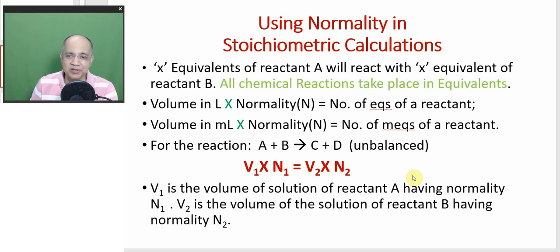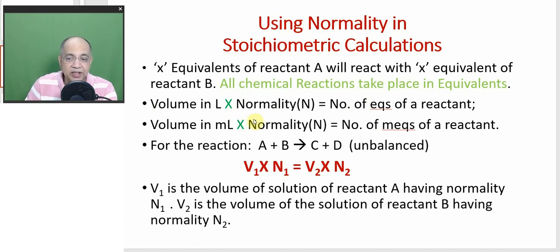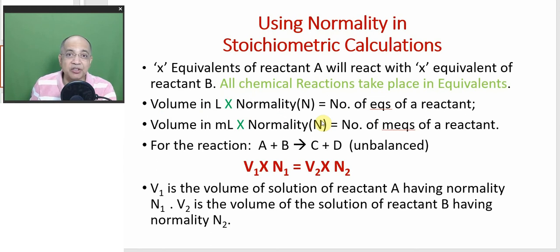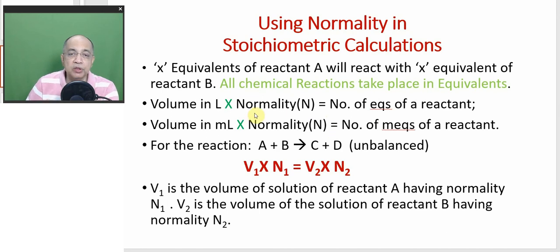In terms of the equivalent concept, the number of equivalents of the two reactants should be the same. I remind you of the famous slogan: all chemical reactions take place in equivalents. That means the volume of solution A in litres multiplied by its normality — we already know how to find out the normality, which is the number of gram equivalents per litre of the solution.